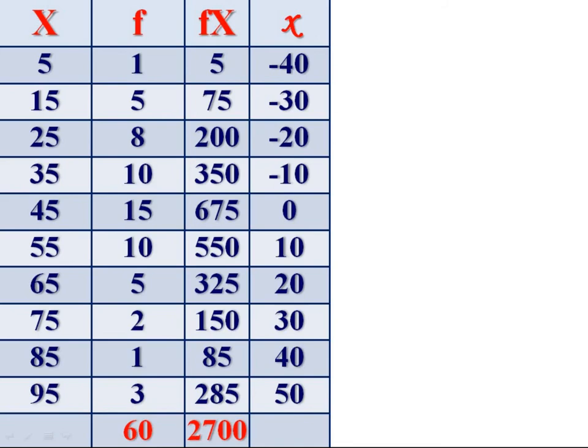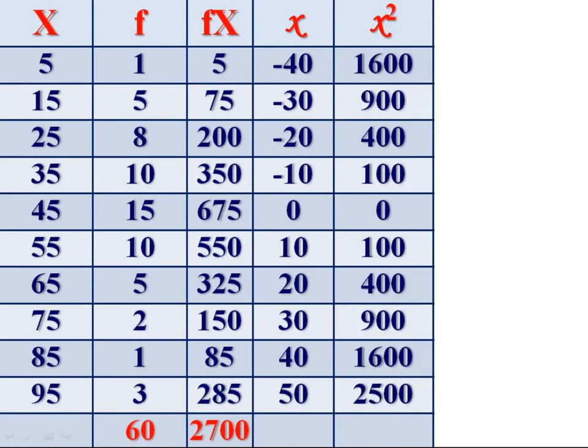Then obtain the square of these deviations. That is x square. 40 square, 1600. Minus 30 square, 900. Minus 20 square, 400. Then 100, 100.